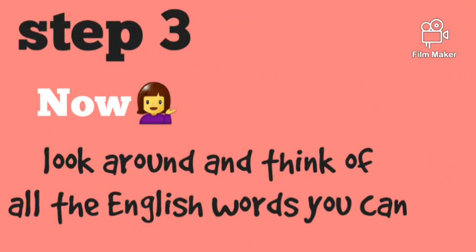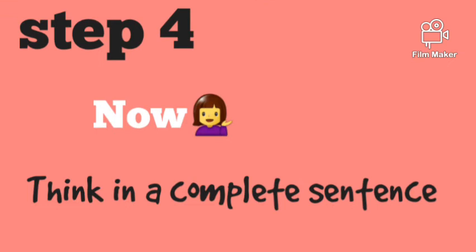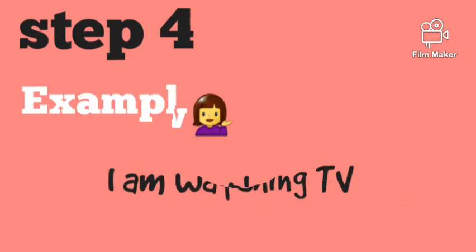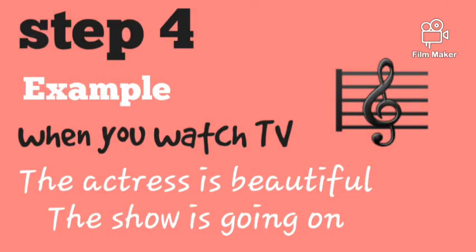Look around and think of all the English words you can. Try to think of at least 10 words. Now think in complete sentences. For example: 'I am watching TV.' When you eat, think: 'I am eating sweets.' When you watch TV, you say: 'The actress is beautiful. The show is going on.'